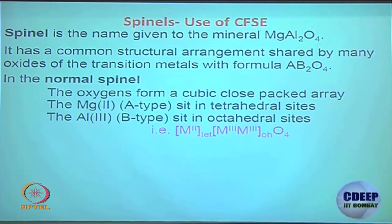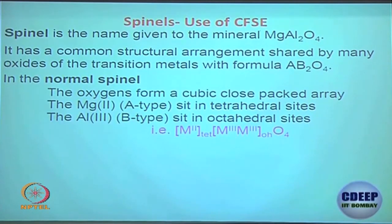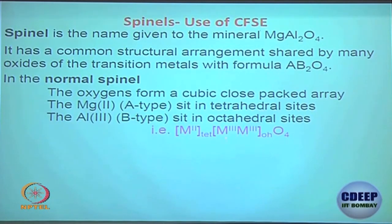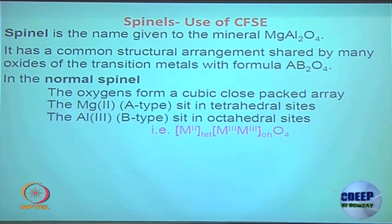Normal Spinels have a specific electronic configuration. There are 4 oxide ions, giving a charge of minus 8. This means the metals are in 3+, 3+, 2+ oxidation states. In normal Spinels, the 3+ metals prefer octahedral geometry and the 2+ metal prefers tetrahedral geometry.